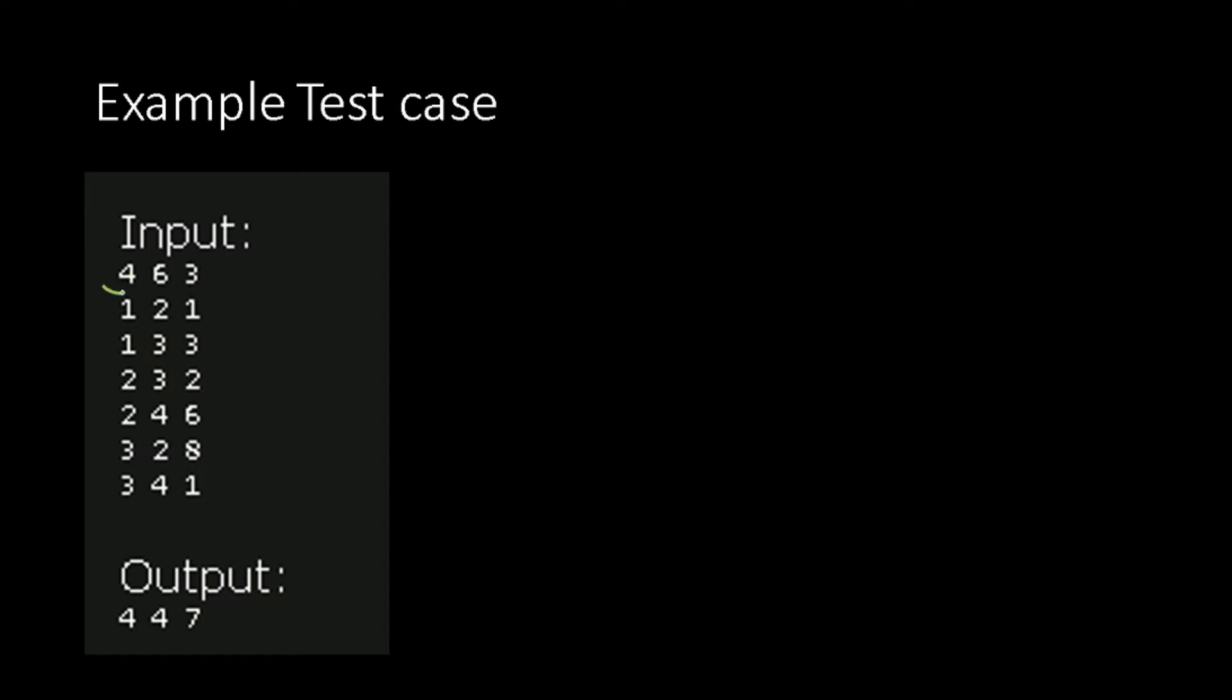Let us look at the example test case. We have 4 cities and 6 routes and we have to output 3 shortest flights. So city 1, city 2, 3 and 4.